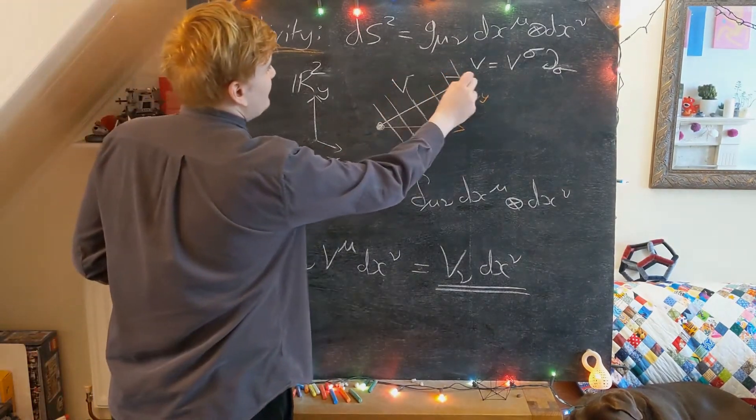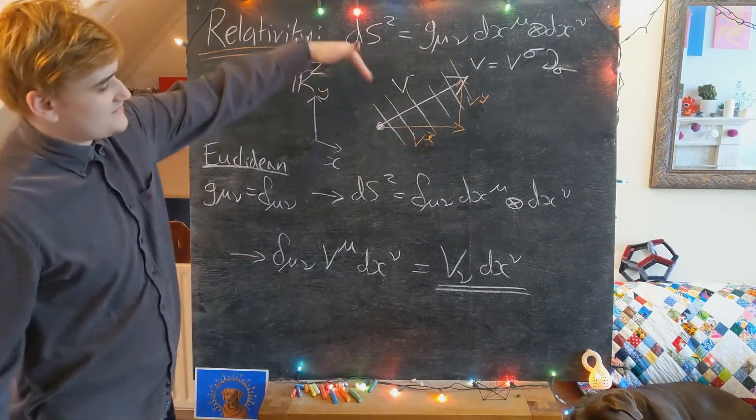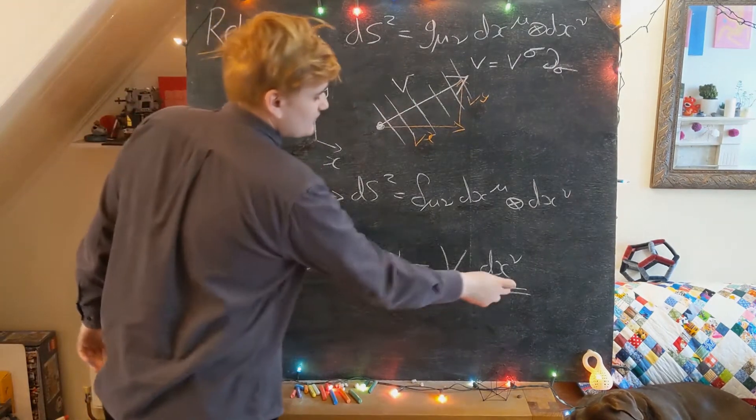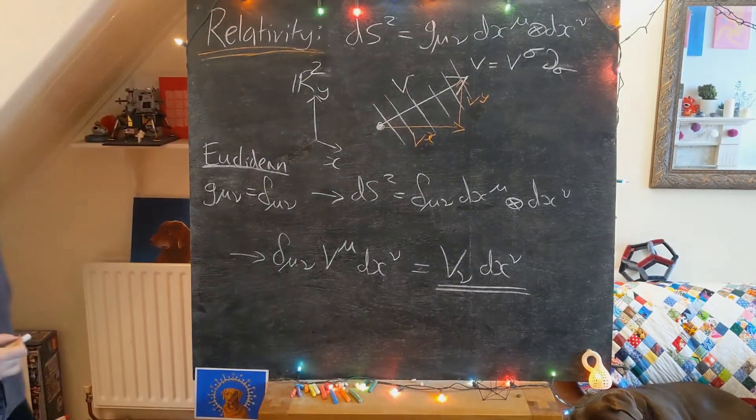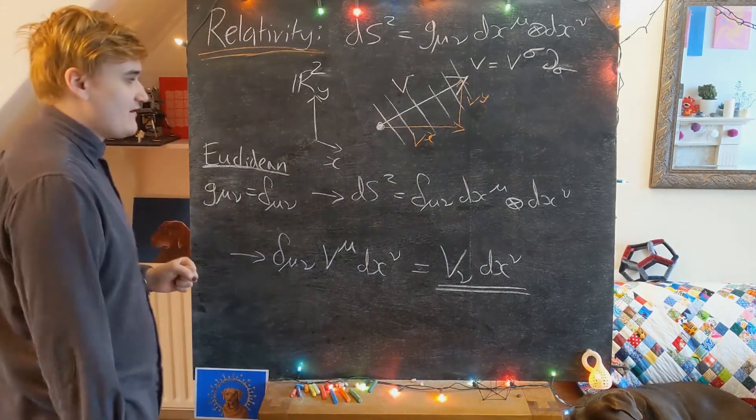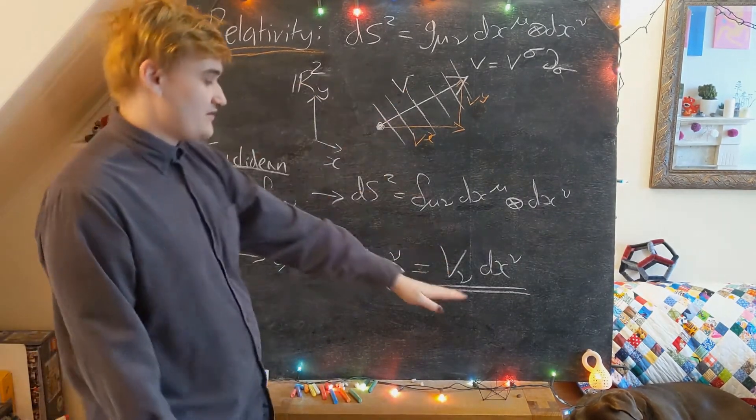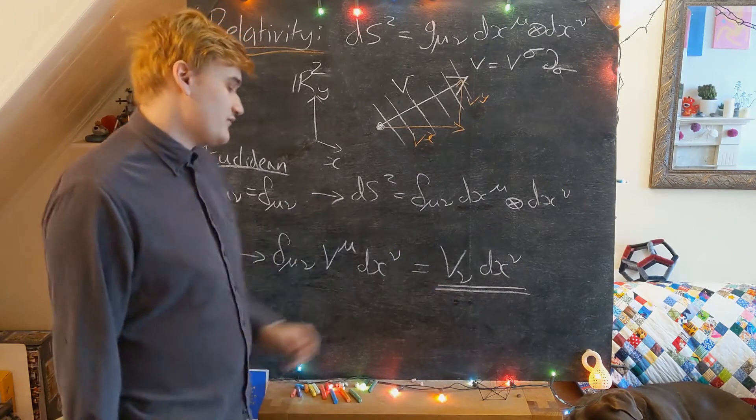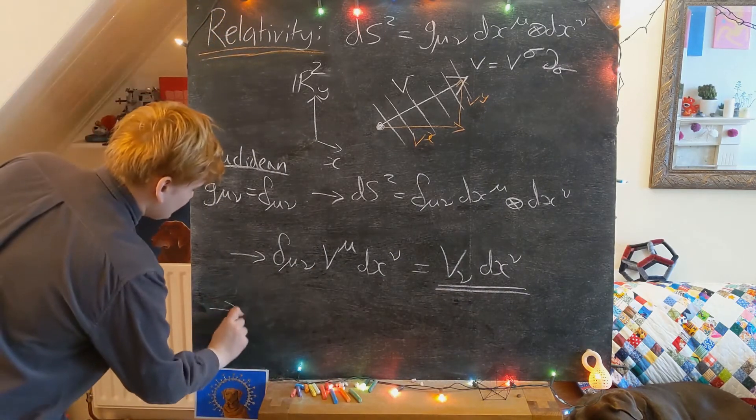So if this V is the arrow which I've drawn, this then stack of sheets is this one-form here. And now what we need to do to measure the length of this vector is just to plug another copy of it into this one-form here. So let's just do that.